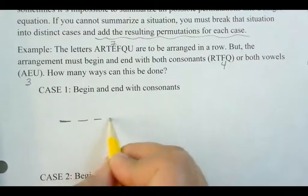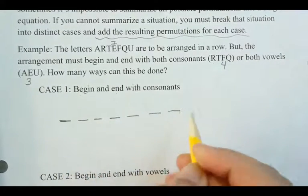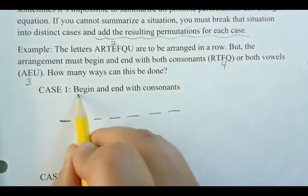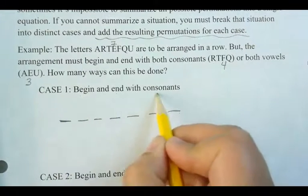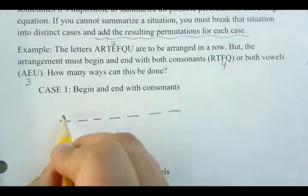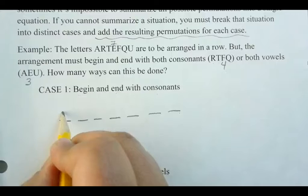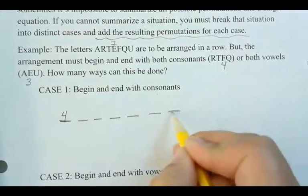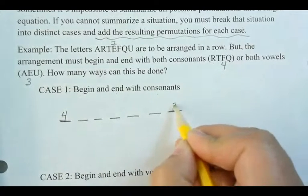So, one, two, three, four, five, six, seven. Now, it must begin and end with a consonant. So how many different ways can I choose a number or a letter for the first spot? Four. Four, and then what do I have left for this last spot? I've got three left.